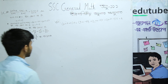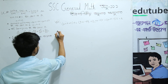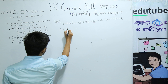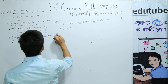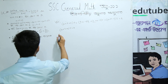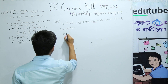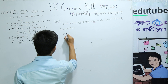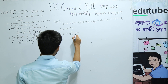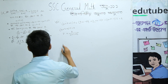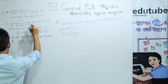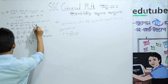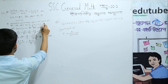Therefore p equals k by (a plus b plus c). Similarly, 1 by q equals (b plus c minus a) by k, 1 by r equals (c plus a minus b) by k, and 1 by s equals (a plus b minus c) by k.